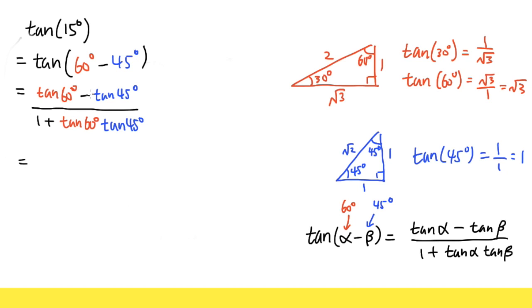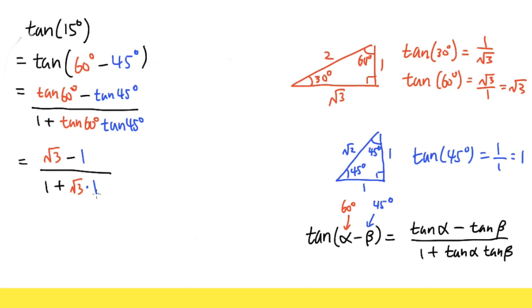Tangent of 60 degrees is square root of 3, and tangent of 45 degrees is 1, so we get square root of 3 minus 1 in the numerator, over 1 plus square root of 3 times 1, which gives square root of 3 in the denominator.